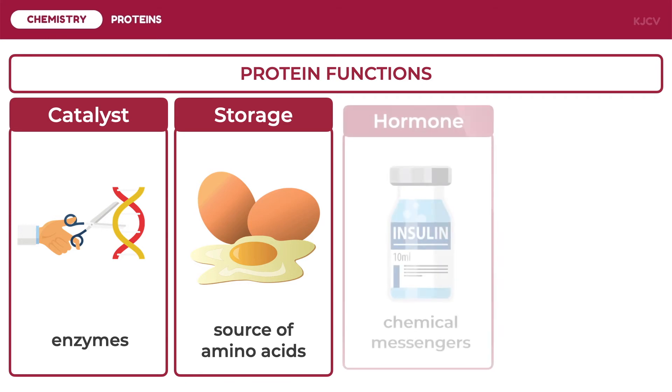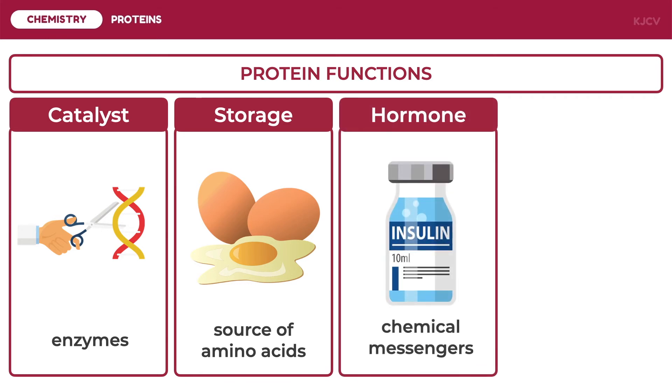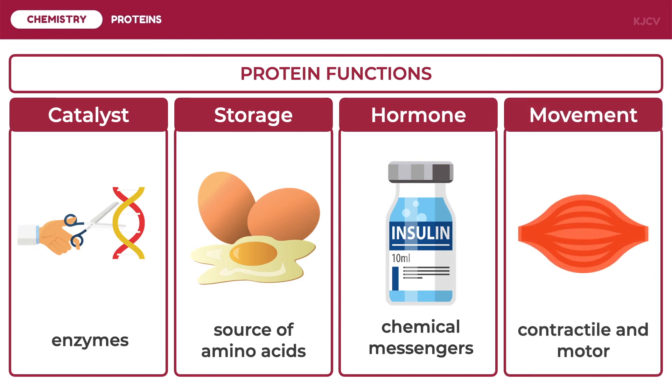Some hormones are also proteins. These are chemical messengers that function for the coordination of an organism's activities, an example of which is insulin. Some proteins also function in movement, for example motor proteins for cilia and flagella and actin and myosin for muscles.